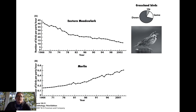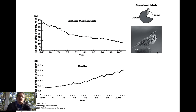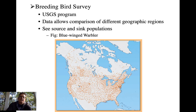The Christmas Bird Count can provide pretty good data showing that unfortunately most grassland species are showing pretty steep declines — like the eastern meadowlark. If you look at trends across all grassland birds, most populations are going down, with few actually going up and some showing stable trends. A merlin, similar to a close relative of our American kestrel, shows the reverse trend with populations actually going up.